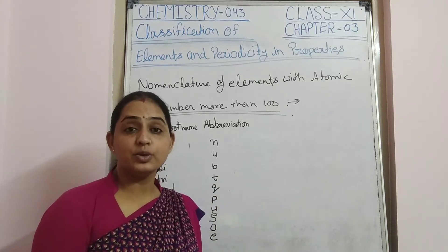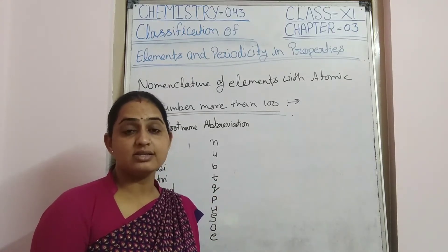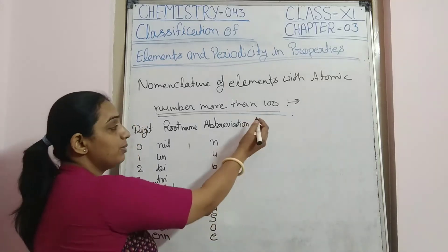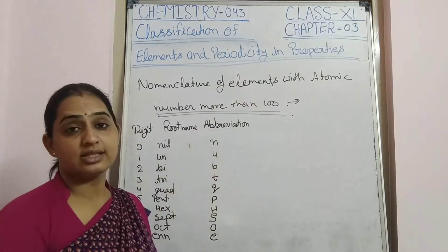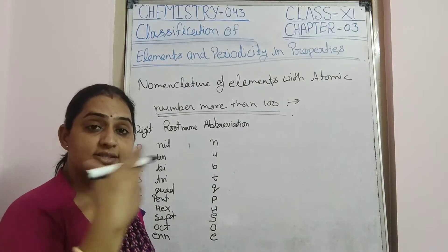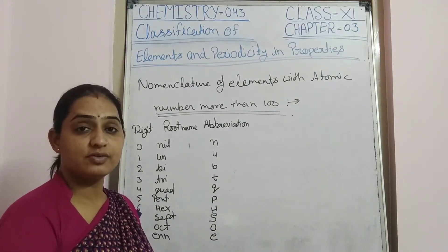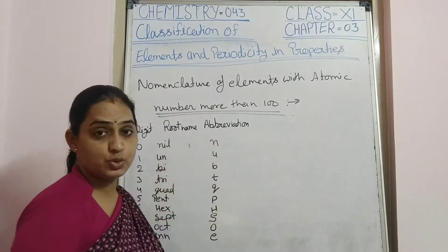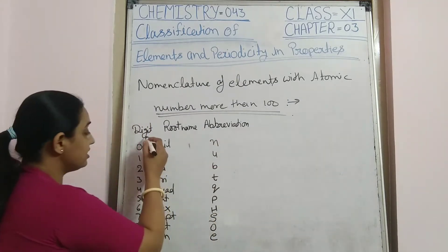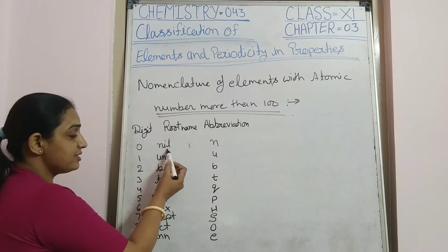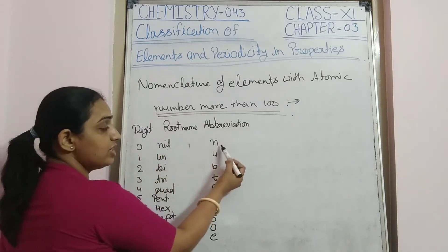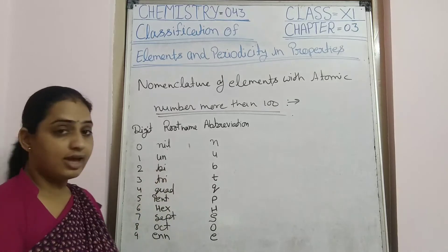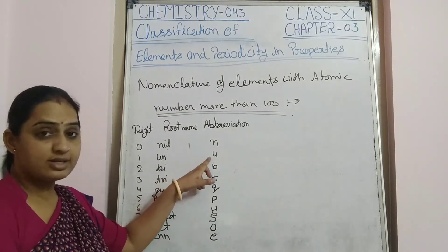On the basis of the IUPAC nomenclature technique, each digit has a root name and abbreviation. Zero is 'nil' (n), one is 'un' (u), two is 'bi' (b).